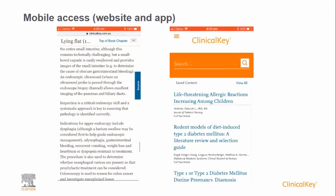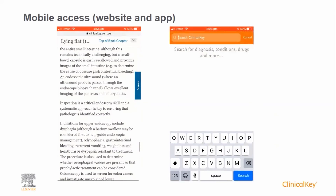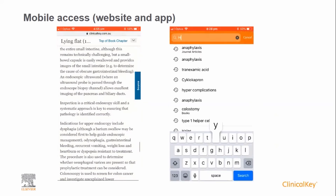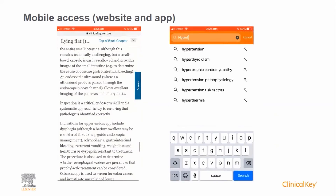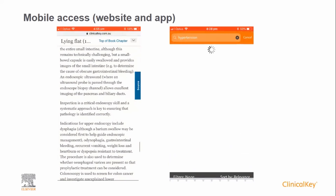As you can see, the app looks slightly different to the mobile website, but it has exactly the same functionality. For example, you can perform a search and open a journal article of interest from the search results page.